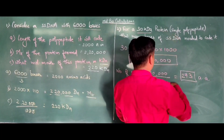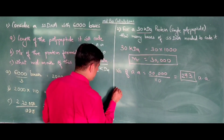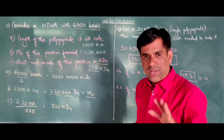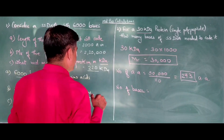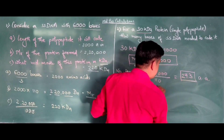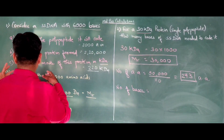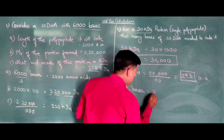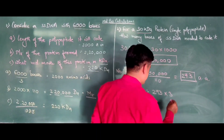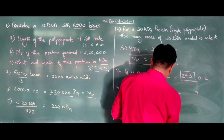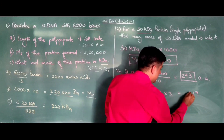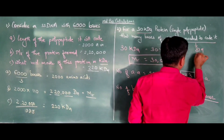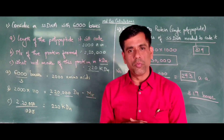So the number of amino acids in this protein is around 273. Now I want to find the number of bases. Since the code is triplet — each amino acid is coded by 3 bases — we go from amino acids to bases by multiplying by 3. So 273 × 3 = 819 bases. The number of bases required to code for this 30 kilodalton protein is approximately 819 bases.